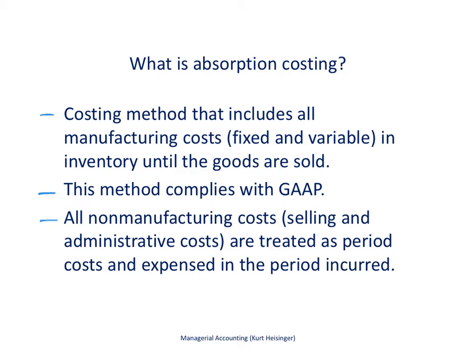We'll start by looking at absorption costing on this slide, and then on the next slide we'll take a look at variable costing, and then we'll compare the two. Absorption costing includes all manufacturing costs — fixed and variable — in inventory until the goods are sold.